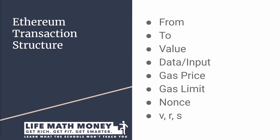The other fields are gas price and gas limit, which will be discussed in the next video. There's also a field called nonce, which is just a serial number of how many transactions have come from this account. There are also fields called VRS, but they pertain to digital signatures and are out of the scope of a beginner-friendly video.